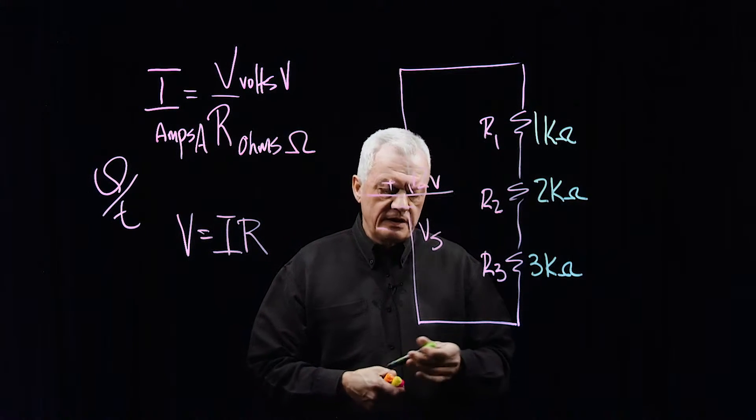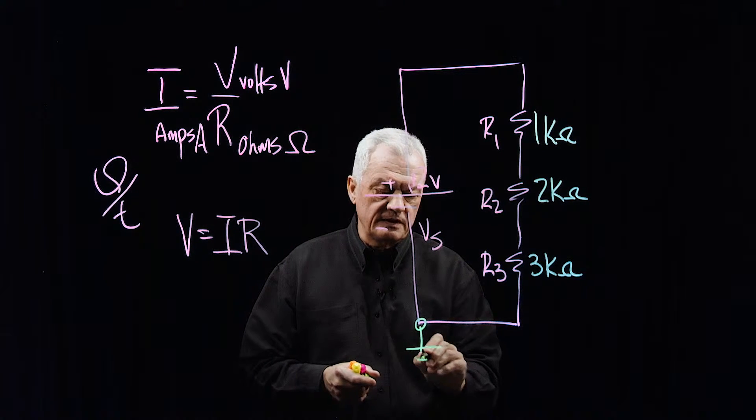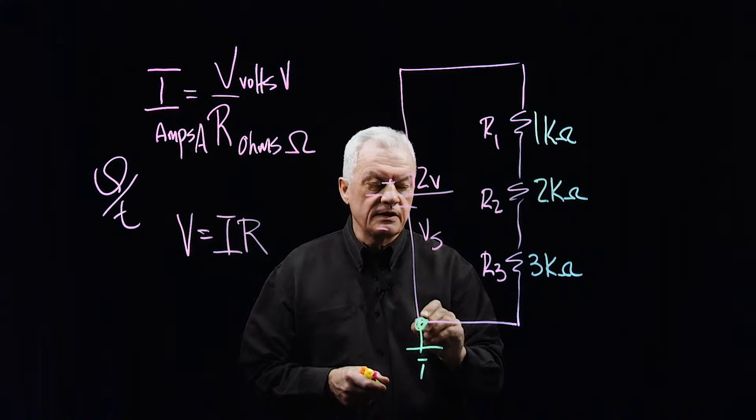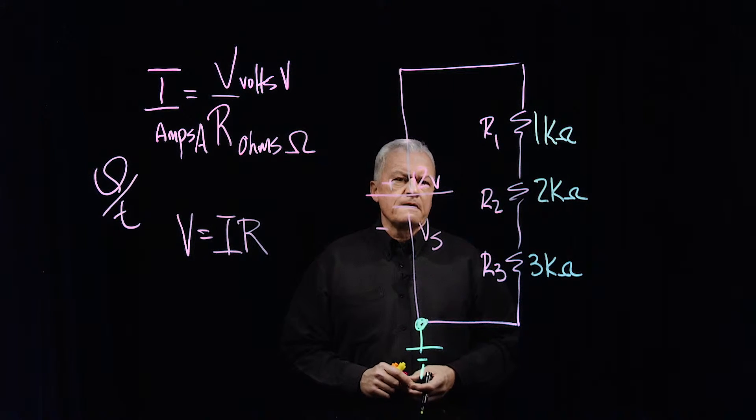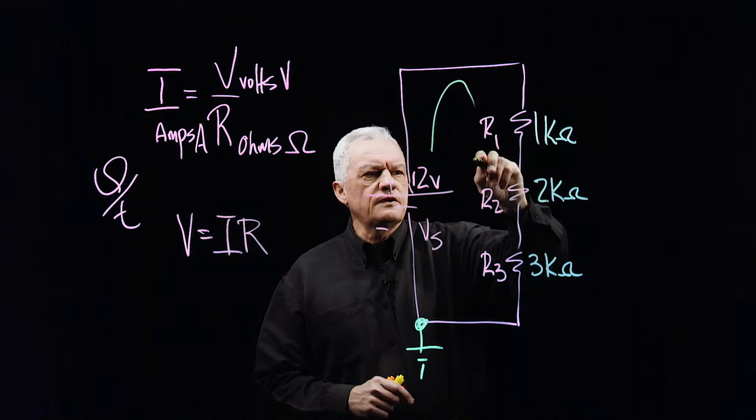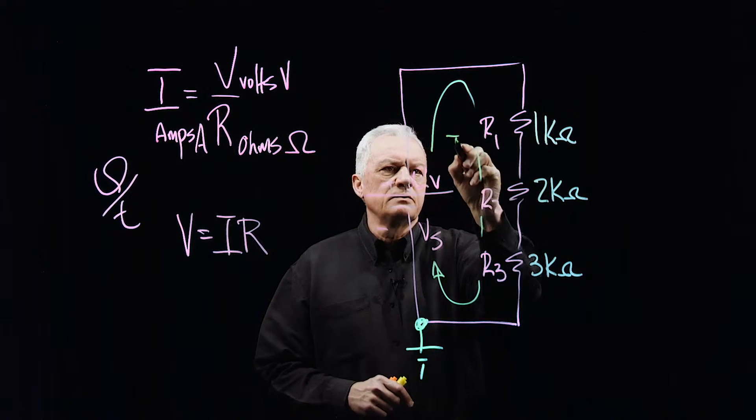One other thing I want to put in here is a reference point. We need to reference everything to some point. In this case here, I'm going to reference everything to this ground, Mother Earth location. We have current that's going to flow in this circuit through each one of these resistors. The same current will flow.